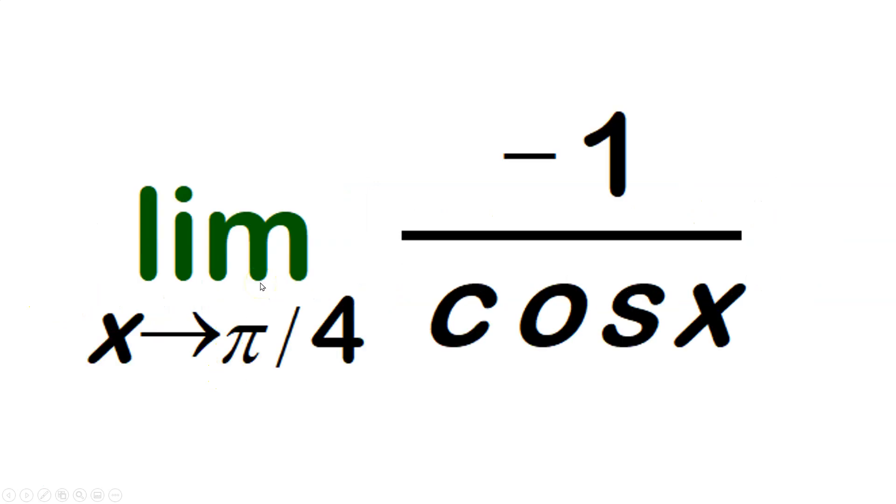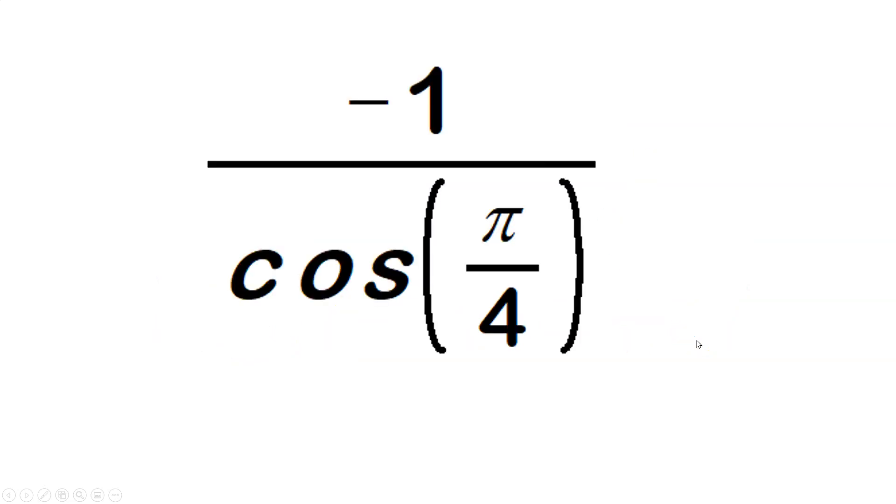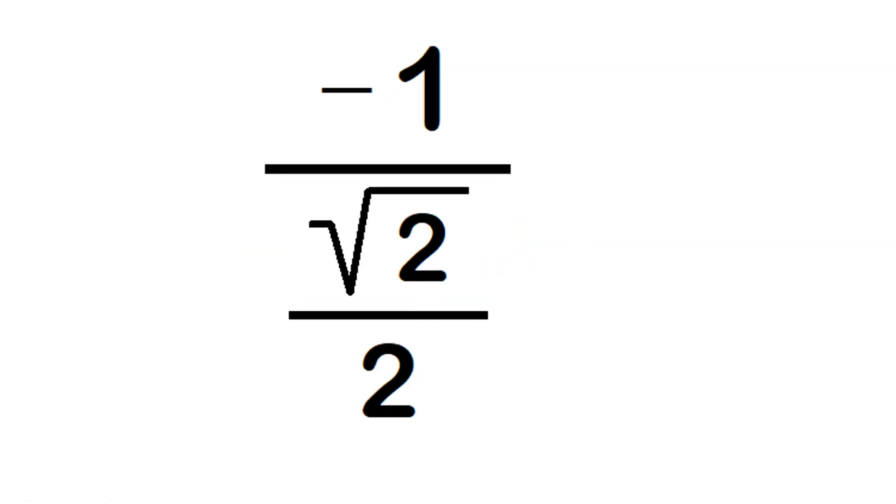So we cancel the expressions, leaving the limit as x approaches π/4 of -1/cos x. Now that can be done through direct substitution. You can just say -1 over cosine of π/4. That's -1 over (√2/2) from the unit circle for cosine of π/4.